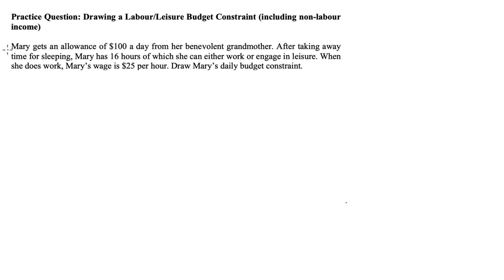So here's my question. We are asked: Mary gets an allowance of $100 a day from her benevolent grandmother. After taking away time for sleeping, Mary has 16 hours of which she can either work or engage in leisure. When she does work, Mary's wage is $25 per hour. We're asked to draw Mary's daily budget constraint.